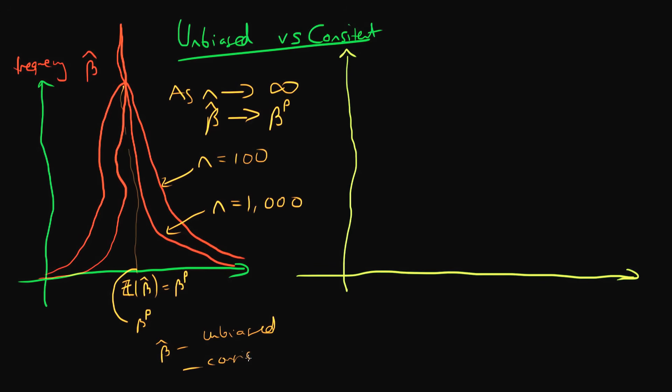So beta hat in this context is unbiased and consistent, but it is also possible to get an estimator which is biased but consistent, and I'm going to illustrate how that's possible.